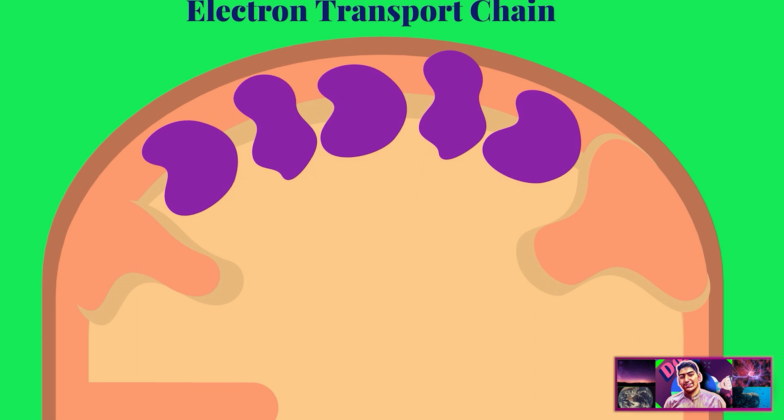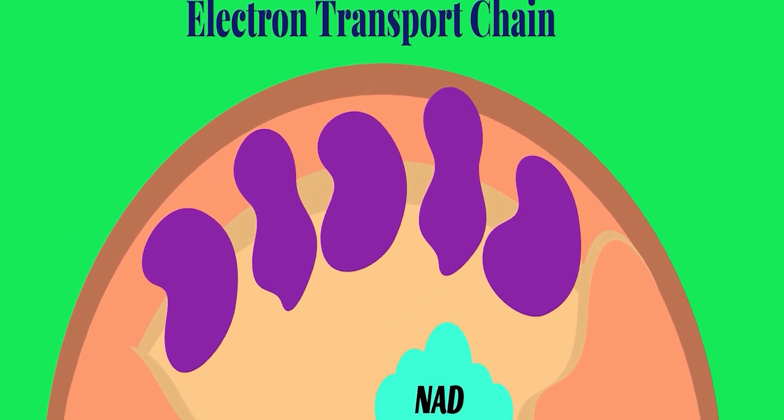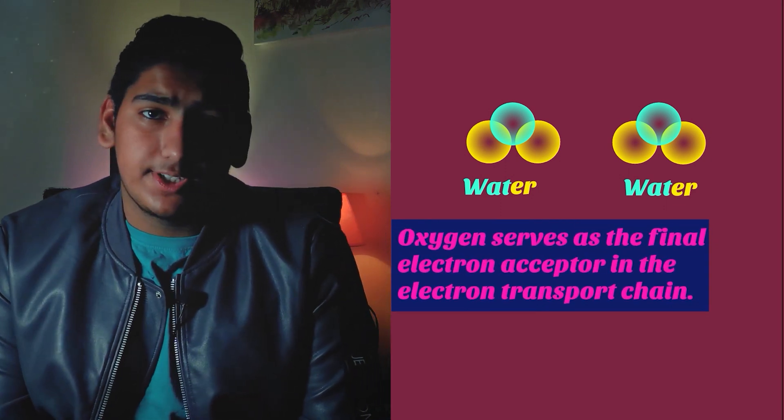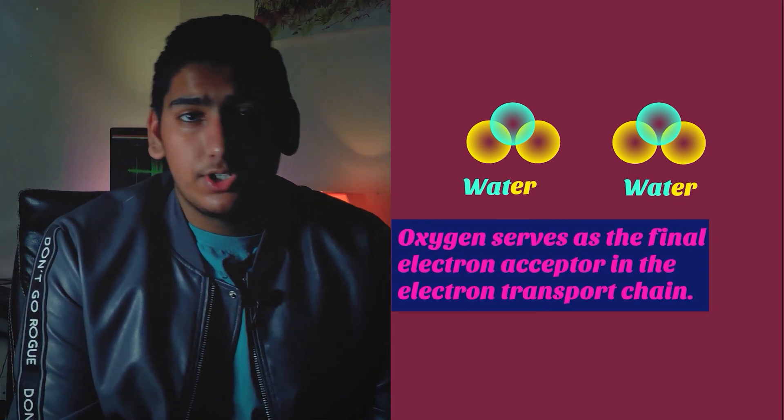The inner membrane of mitochondria is composed of a series of electron carriers. These electron carriers pass high-energy electrons from one carrier to the other. Eventually, these electrons meet an enzyme that combines them with hydrogen ions and oxygen to form water. Oxygen serves as a final electron acceptor in the electron transport chain, and is essential for getting rid of waste of cellular respiration. Without oxygen, the electron transport chain cannot function.